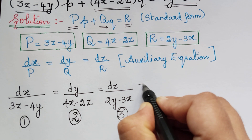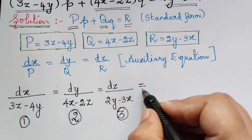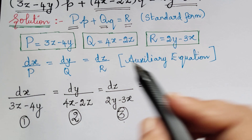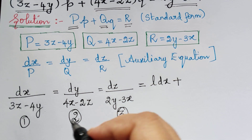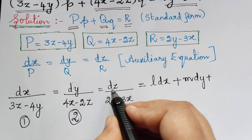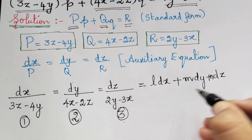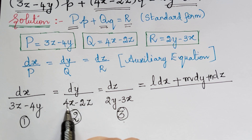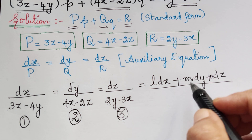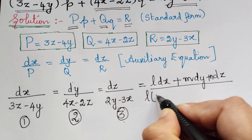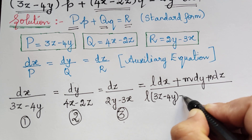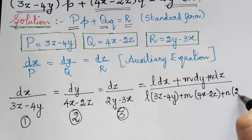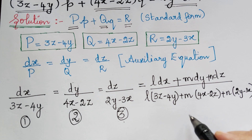For the method of multipliers, we form a new fourth ratio. We take multipliers L, M, and N where the numerator is L·dx + M·dy + N·dz, and the denominator is L(3z - 4y) + M(4x - 2z) + N(2y - 3x). This is the fourth ratio.